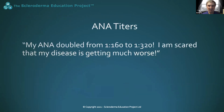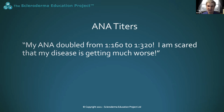Patients post comments about this all the time in support groups. It is important to understand that normal testing variance for ANA titers is plus or minus one titer level. This means that if your true ANA titer is 1:160, testing of the same blood sample may sometimes show 1:80 or 1:320. In this example, 1:160 and 1:320 are considered the same. In contrast, a change from 1:80 to 1:640 would be considered a significant change in titer level.